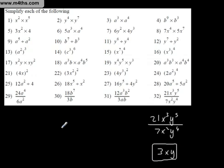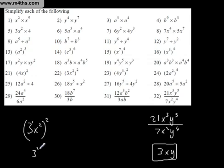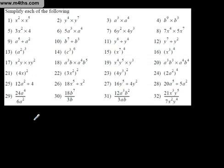Another big concern: 3X squared, all squared. This is one of my killers — people wind up getting 6X to the 4th. Remember, the 3 has a power of 1 on it, so we end up with 3 squared and X to the power of 4, which is 9X to the 4th. Then X to the 4th times Y to the 5th, multiplied by Y cubed — we simply add the powers and get X to the 4th, Y to the power of 5 plus 3, which is Y to the 8th.